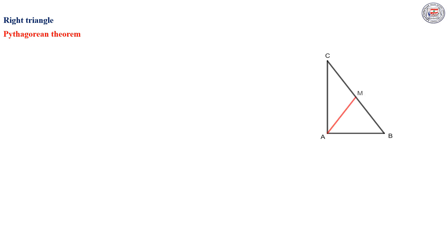We will start by the right triangle, and especially by the Pythagorean Theorem. If ABC is a right triangle at A, then BC squared is equal to AB squared plus AC squared.